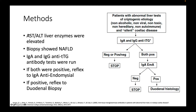Here are the methods. Everyone's AST and ALT were elevated, and they were given an actual liver biopsy, which confirmed non-alcoholic fatty liver disease. They ran IgA and IgG anti-TTG for everyone. If both came back positive, they reflexed to IgA anti-endomysial antibodies. If negative for that, they stopped. If positive for that, they reflexed again to endoscopy and biopsy.